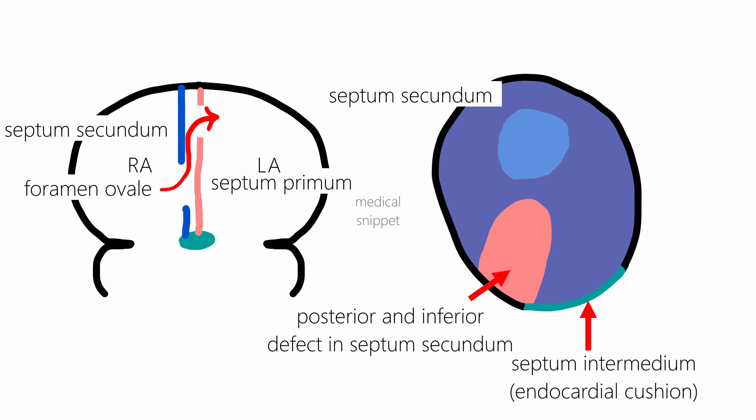The foramen ovale maintains the right to left shunt in the fetal heart. The foramen ovale acts as a one-way valve. The septum primum lies behind the opening in the septum secundum, allowing blood to move from the right atrium to the left atrium by a pressure gradient, and it limits backflow by the septum primum being forced against the septum secundum by higher left atrial pressure.